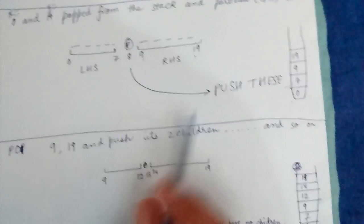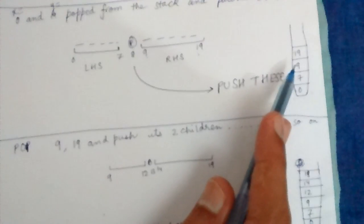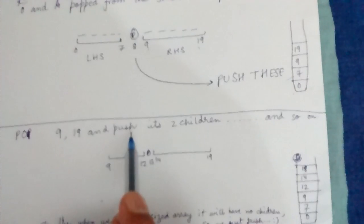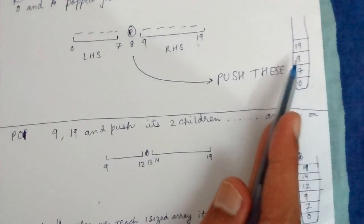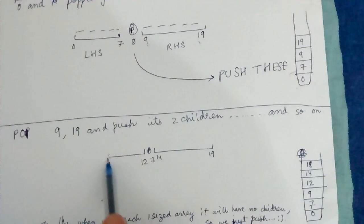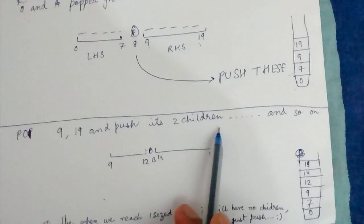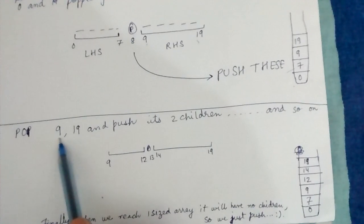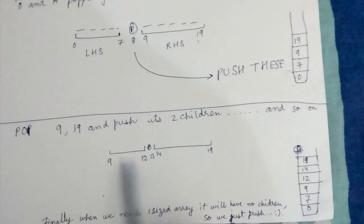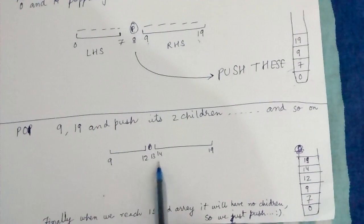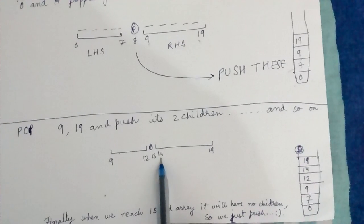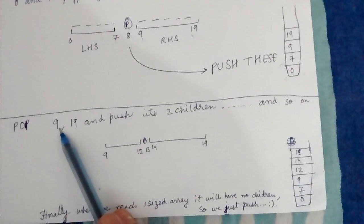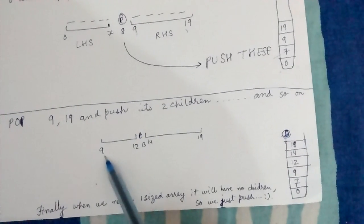Next step: as soon as we pop 9 and 19, we push its two children. When we call partition(9, 19) it is partitioned into two parts: 9 to 12, and 13 is the pivot, and 14 to 19.